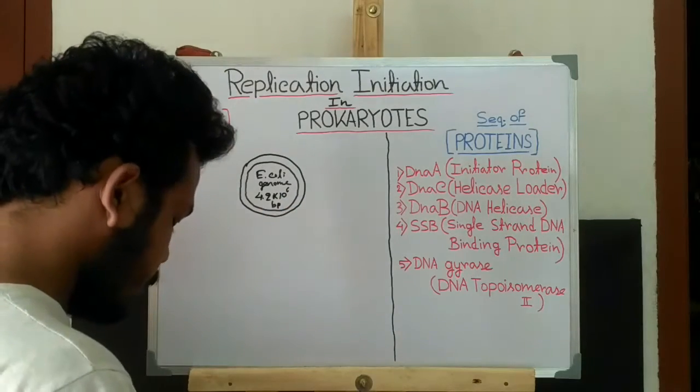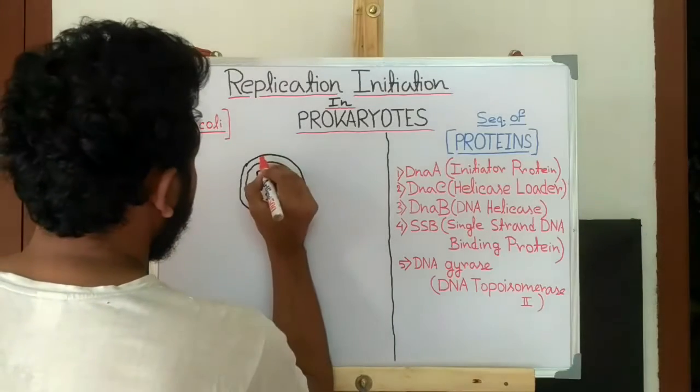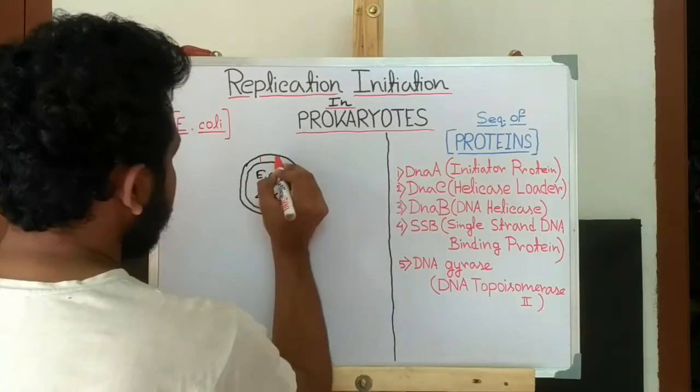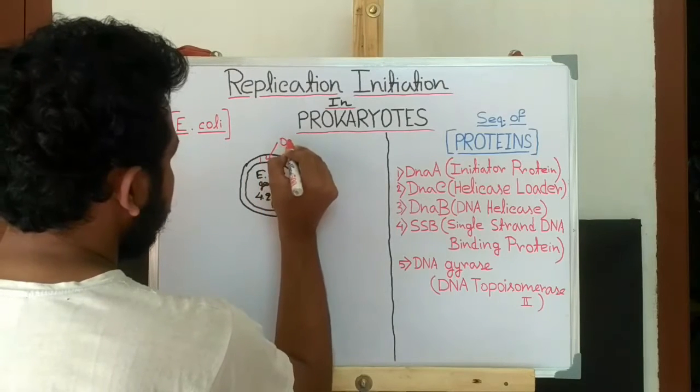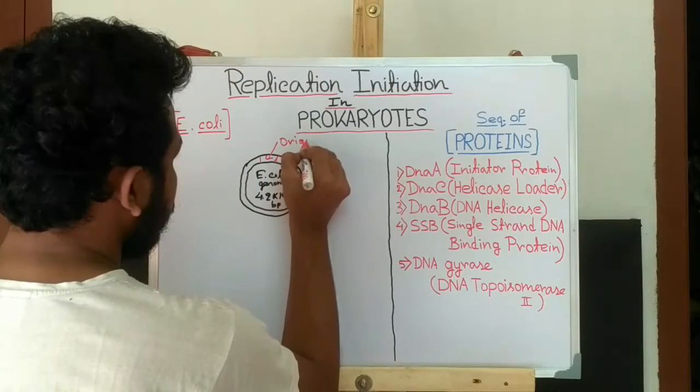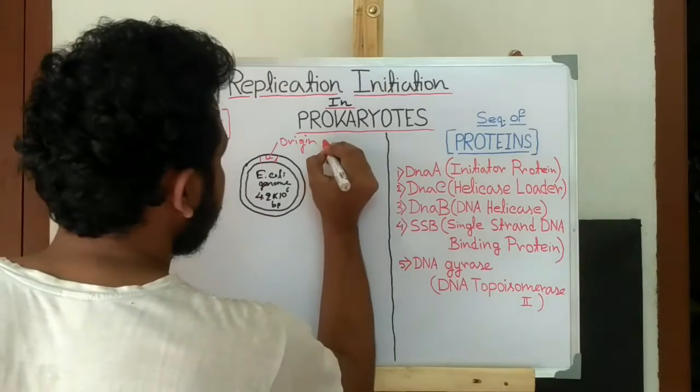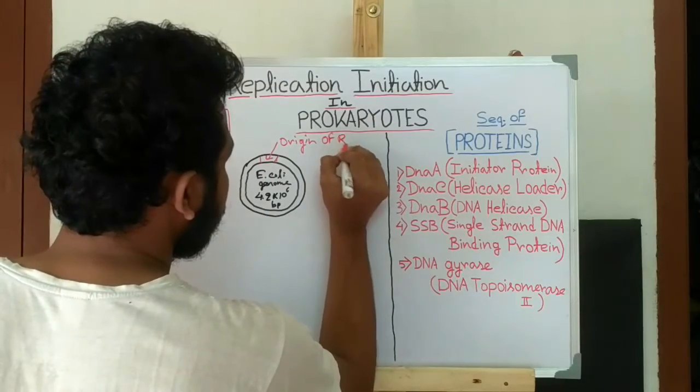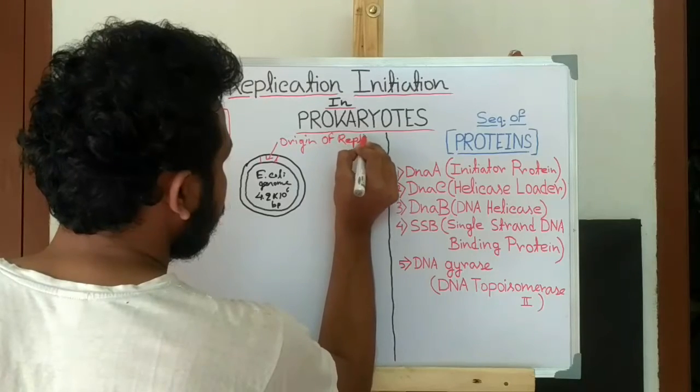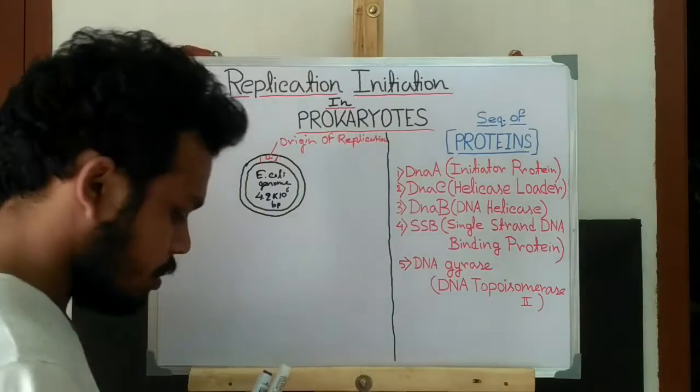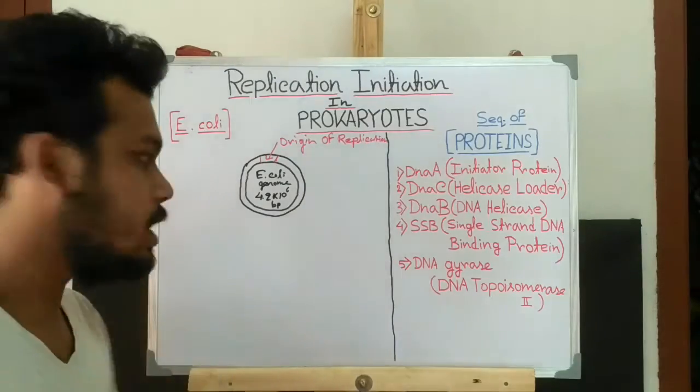Now suppose here a region is present which is called origin. More specifically it is called origin of replication, where the replication is initiated.